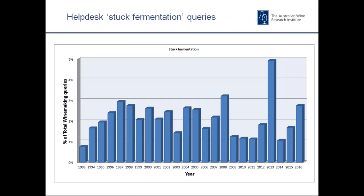The AWRI has been providing a technical problem-solving service to levy payers for many years now, and we receive queries about all aspects of winemaking — we now call this service the AWRI's help desk. We categorize the queries we receive, and this slide shows stuck ferment queries as a percentage of total queries received from May 1993 to June 2016. Stuck ferment queries on average represent maybe 1–2% of all our queries, although some years we receive more — for example, in 2013 you can see that big peak, representing about 5% of all queries that year.